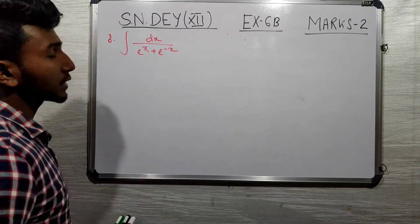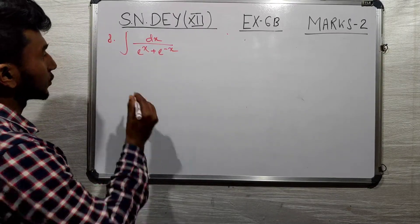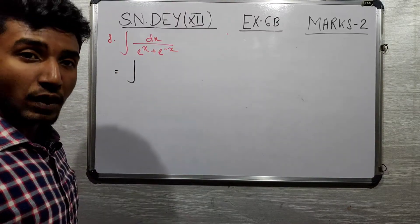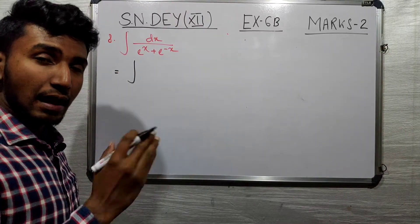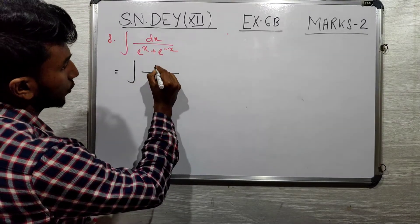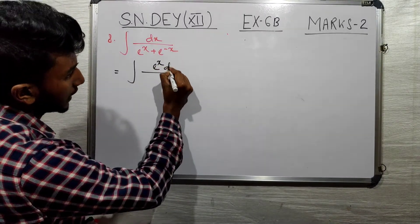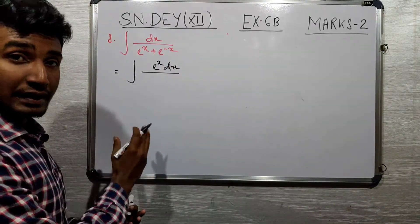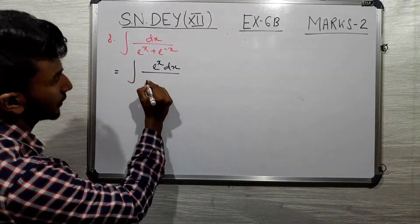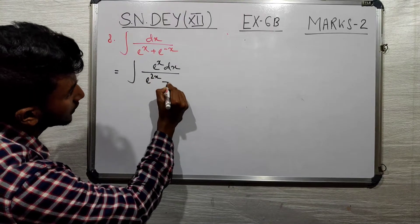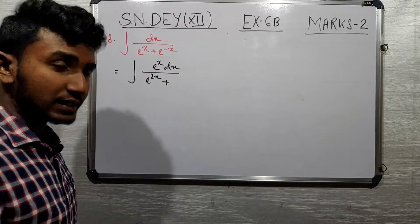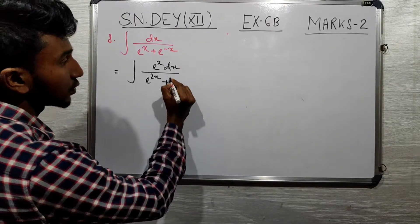What do we do with this? We multiply by e to the power x in both numerator and denominator. So the numerator becomes e to the power x dx, and the denominator becomes e to the power x plus e to the power minus x, multiplied by e to the power x, which gives e to the power 2x plus 1.